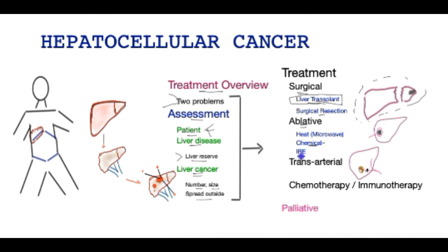A newer modality of ablative treatment is called IRE (Irreversible Electroporation). In this treatment, several probes are placed around the tumor and then electric current is passed for a fraction of a second, thus destroying the tumor but preserving collagen structures such as blood vessels and bile tubes. IRE is more suitable for tumors which are near blood vessels or bile tubes, where other ablative treatments may not be applied.